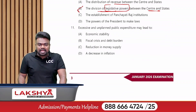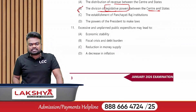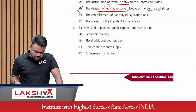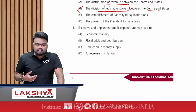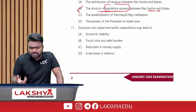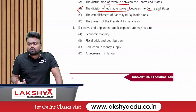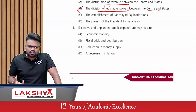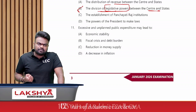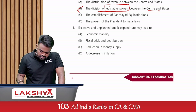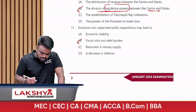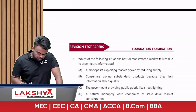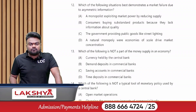Excessive and unplanned public expenditure may lead to what? If the government spends unnecessarily without planning, it automatically creates a burden on the people, and that burden is called a fiscal crisis. The answer is option B.